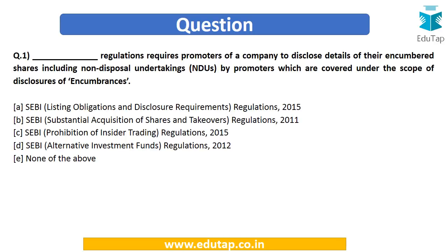Let's start with the first question. Which regulations require promoters of a company to disclose details of their encumbered shares, including non-disposal undertakings by promoters, which are covered under the scope of disclosures of encumbrances? The options are: (A) SEBI Listing Obligations and Disclosure Requirements Regulations 2015, (B) SEBI Substantial Acquisition of Shares and Takeovers Regulations 2011, (C) SEBI Prohibition of Insider Trading Regulations 2015, (D) SEBI Alternative Investment Fund Regulations 2012, or (E) None of the above.